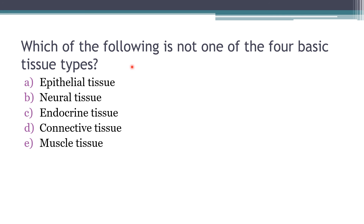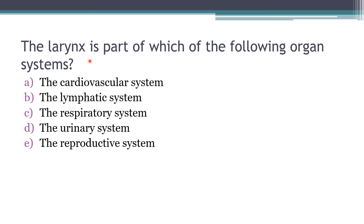For review: which of the following is not one of the four basic tissue types? The correct answer is endocrine tissue — the four tissue types are epithelial, connective, muscle, and neural tissue. Next: the larynx is part of which organ system? The answer is the respiratory system. I can give you an organ and ask which system it belongs to, or give you a system and ask which organs are part of it.